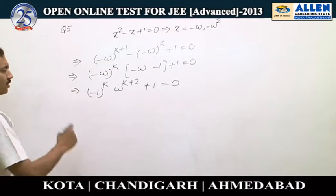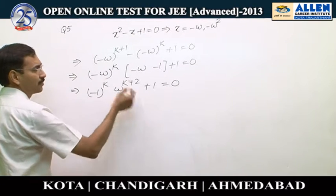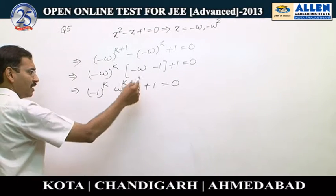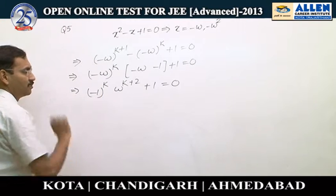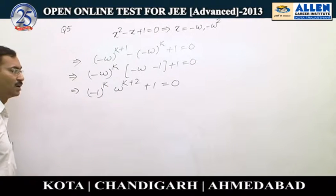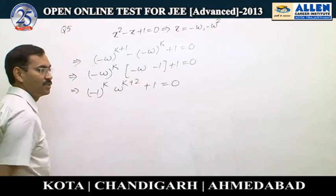So if we want to make it 0, k + 2 should be a multiple of 3, so that it can be 1. Simultaneously, k must be an odd number, so that -1 + 1 will make it 0.